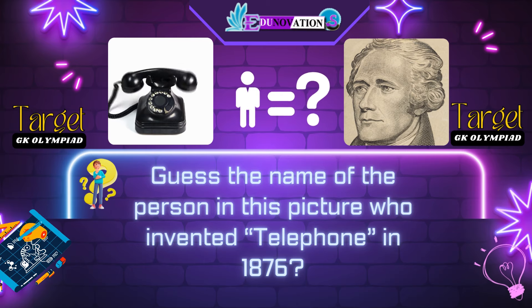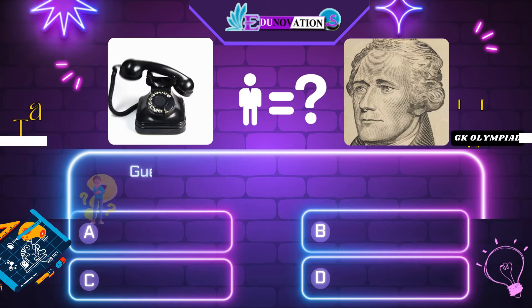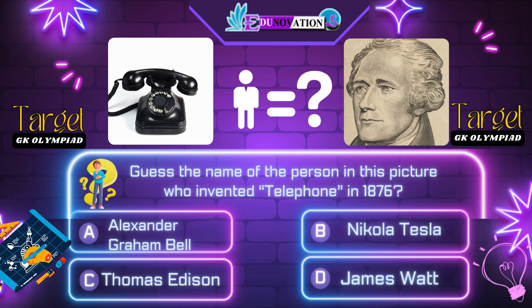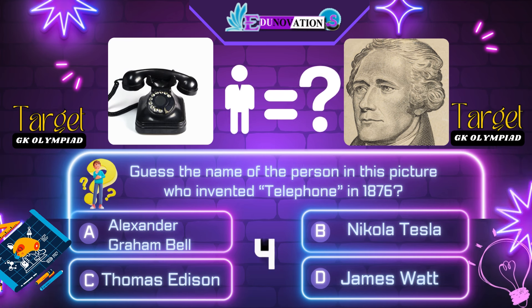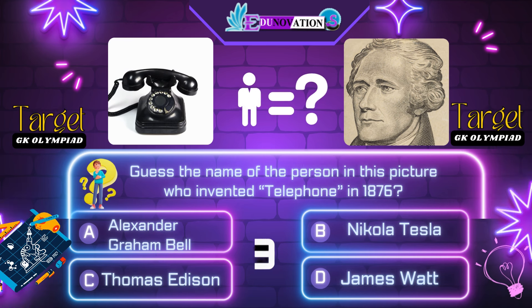First question. Guess the name of the person in this picture who invented the telephone in 1876. Your options are: A. Alexander Graham Bell, B. Nikola Tesla, C. Thomas Edison, D. James Watt. Time's up. Correct answer is A. Alexander Graham Bell.